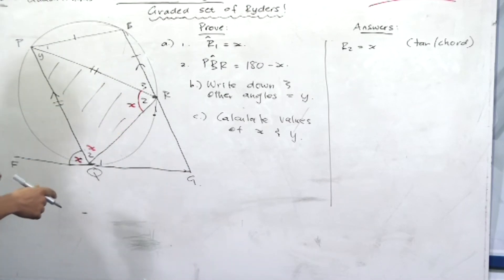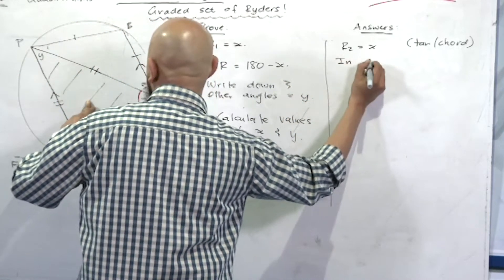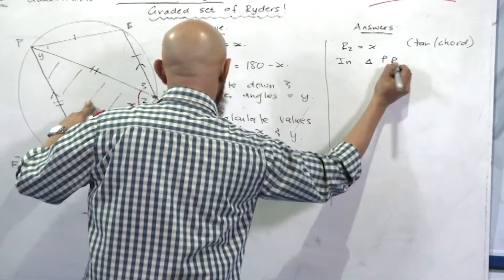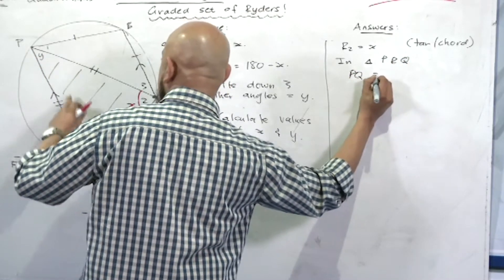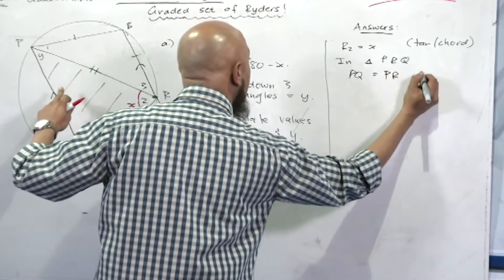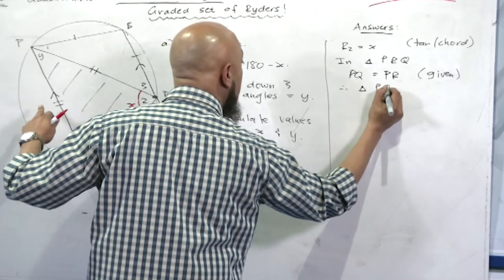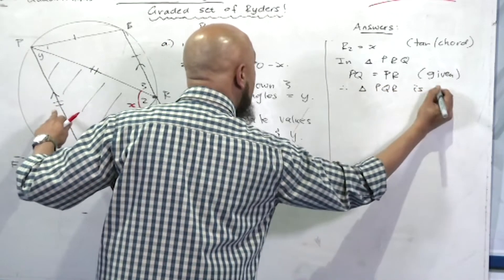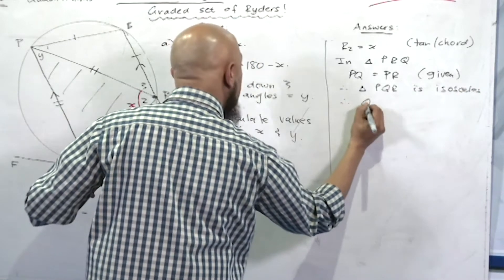So now we say in triangle PRQ, we've got PQ is equal to PR, that was given. Therefore, triangle PQR or PRQ is isosceles. Therefore, angle q2 is also equal to x.